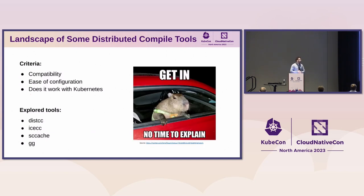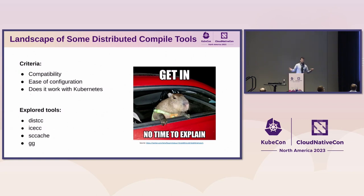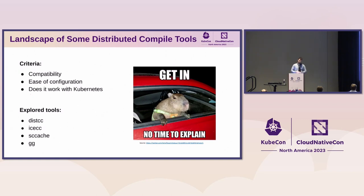We have some criteria we want to meet. We want this to be compatible with what already exists, with minimal effort. We want the user to be able to use it easily, so there's no excuse — since the user defaults to what is easiest, if you present an easier solution that works just as well, they will actually adopt it. And we really want to make this a Kubernetes service, because why not? So this is basically my experience and failures trying to implement these tools to run in Kubernetes.